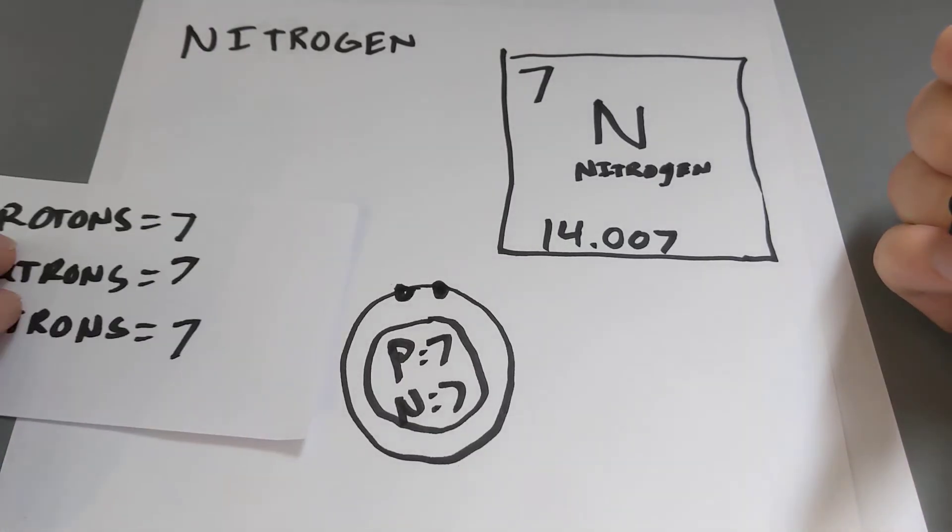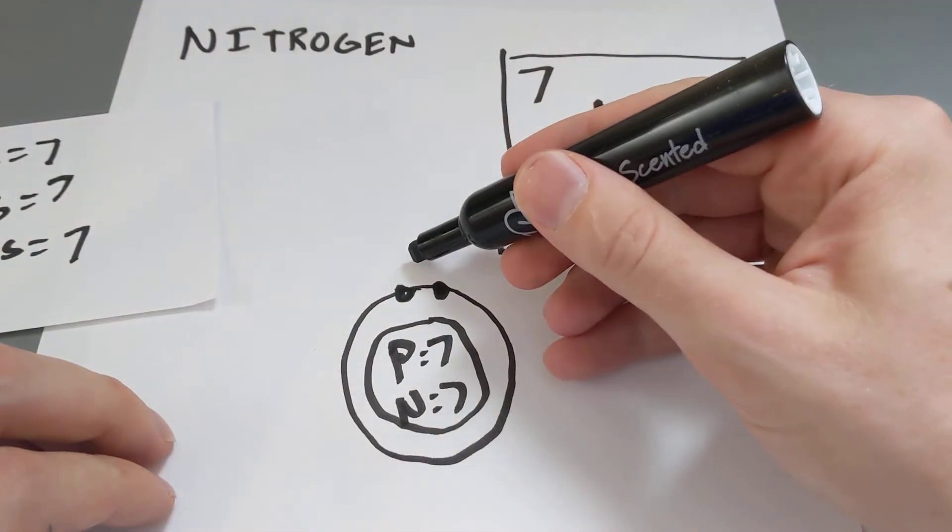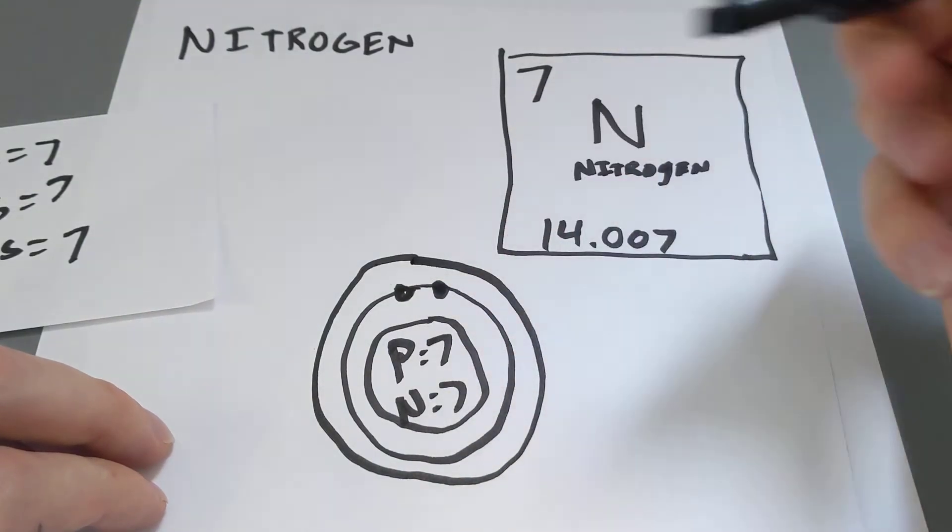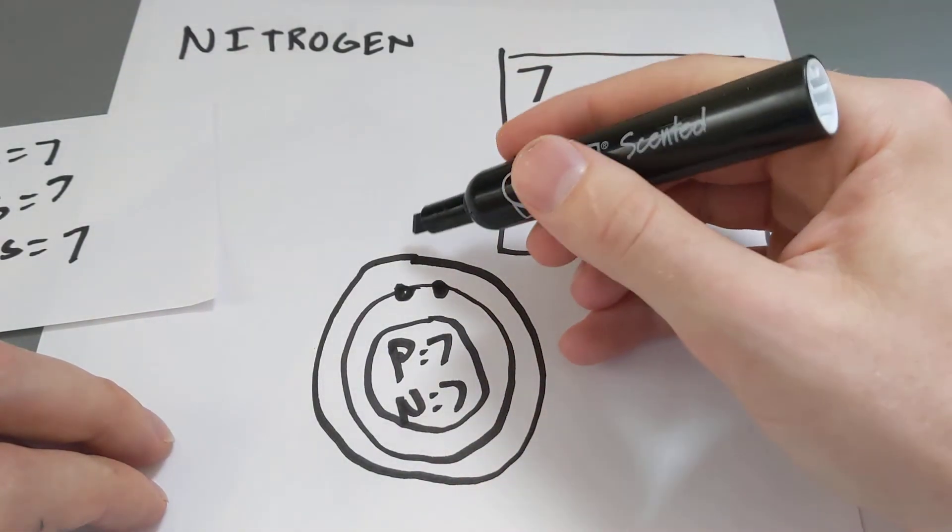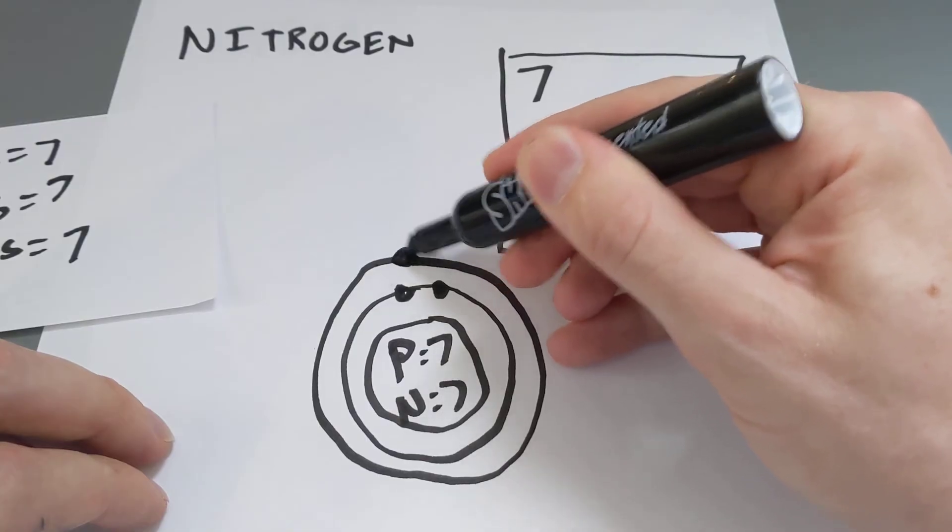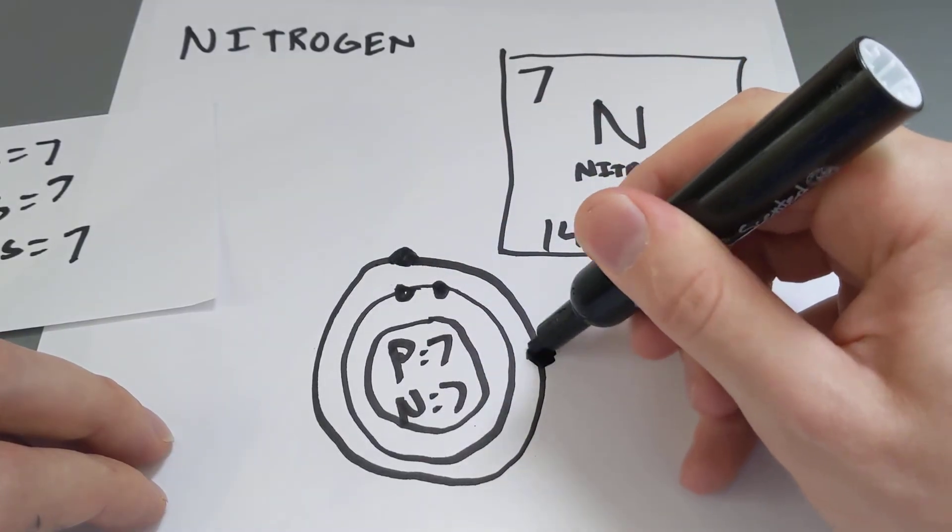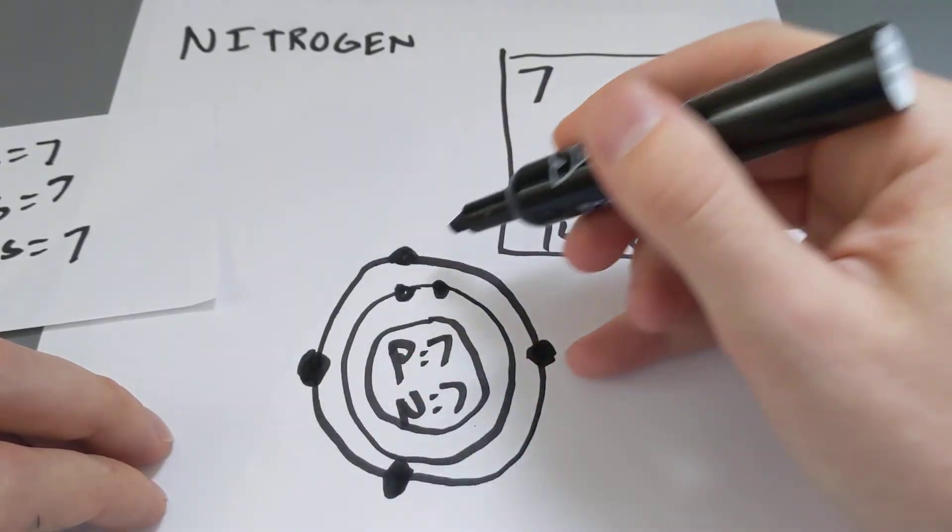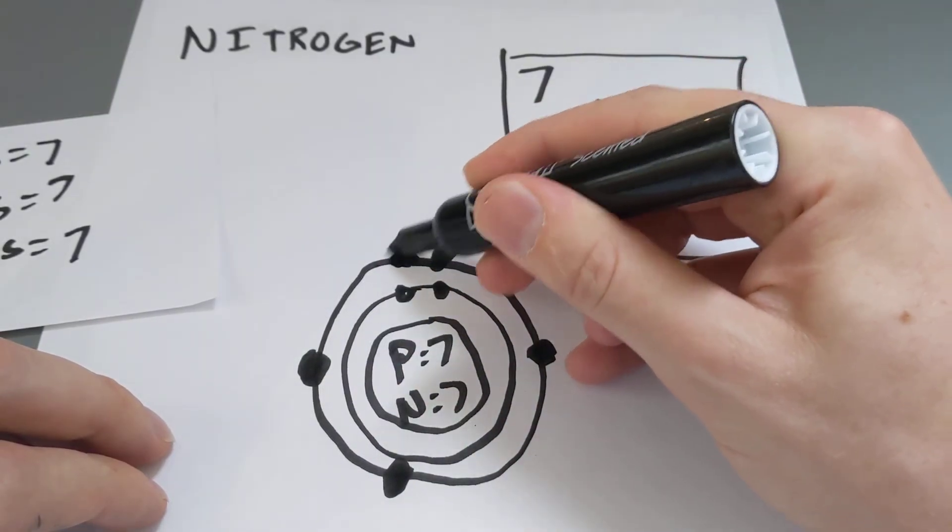But we still need 5 more because we have 7 electrons total. So, we draw another shell, now that this is our valence shell. And we need to fill in the extra 5. This one can hold 8 electrons. So, 1, 2, 3, 4, and 5.